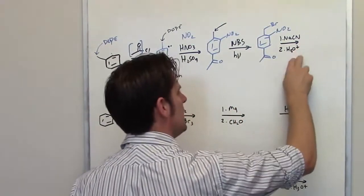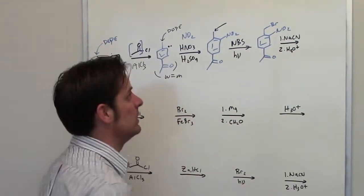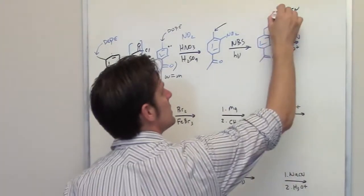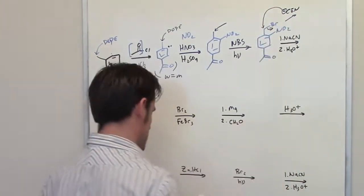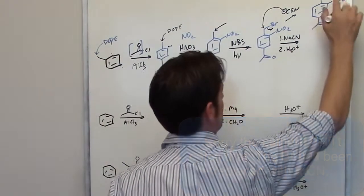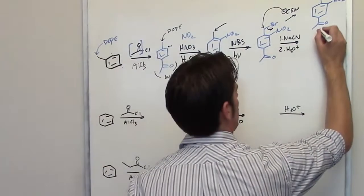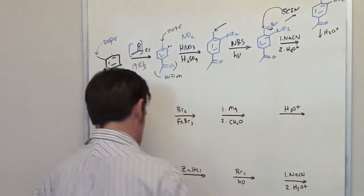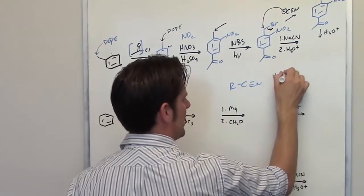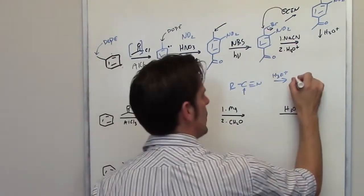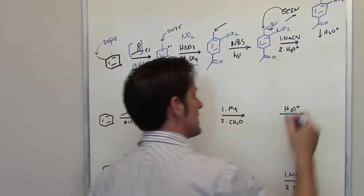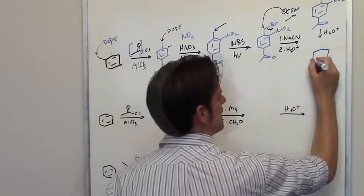Now I take this molecule and treat it with sodium cyanide followed by aqueous acid — that's a two-step sequence. In step one, sodium cyanide acts as a source of cyanide, which performs an SN2 reaction: cyanide comes in, kicks off the bromide, and gives the nitrile product. In step two, treating any nitrile with aqueous acid converts that carbon into a carboxylic acid group. So the final product of this two-step sequence is the carboxylic acid.